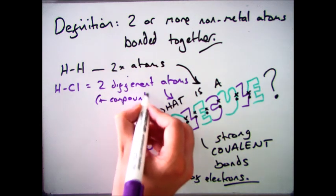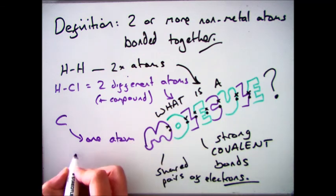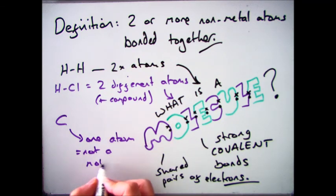And then we have carbon. Now carbon is one atom on its own, so we actually say this is not a molecule. Going back to our definition, we need to have two or more metal atoms bonded together.